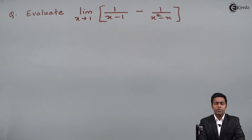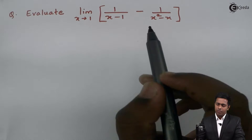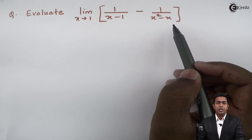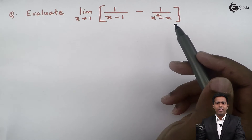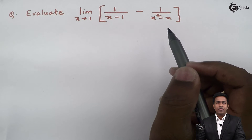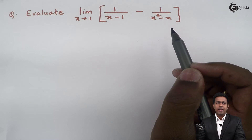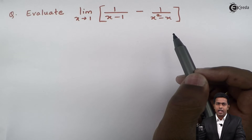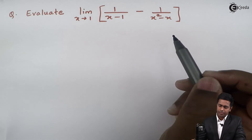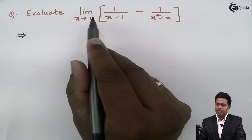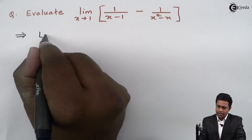Before starting with this solution, if you observe the given function, it is an algebraic function. Whenever we have an algebraic function in a limit, we always start with the direct method. So let's apply the direct method to get the value.